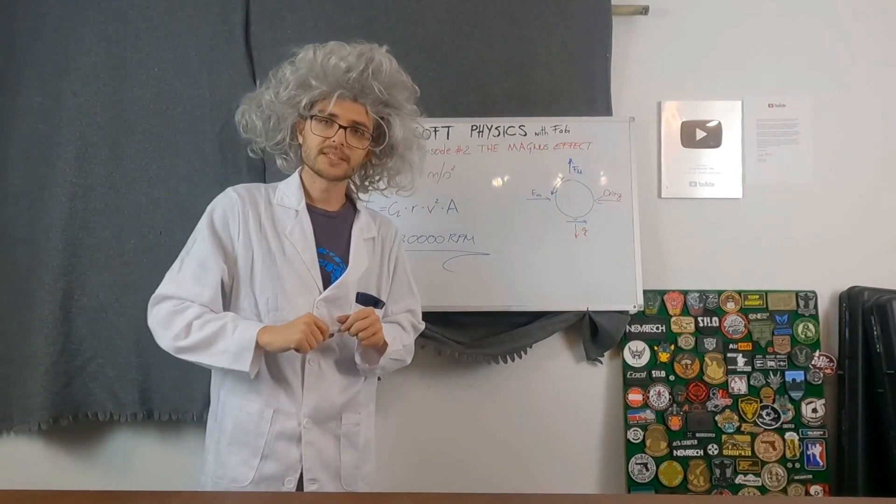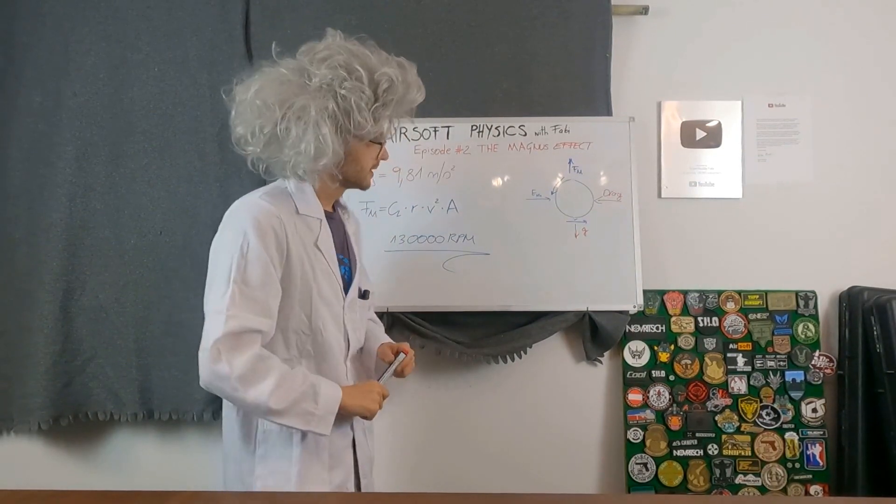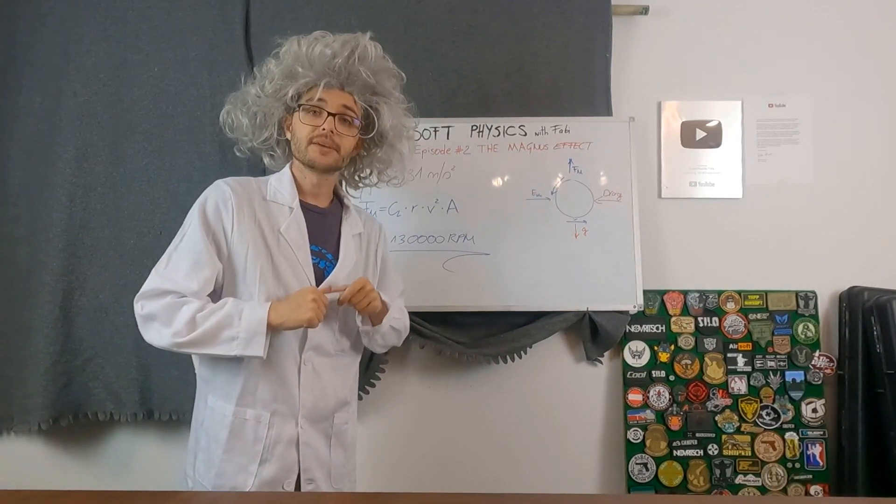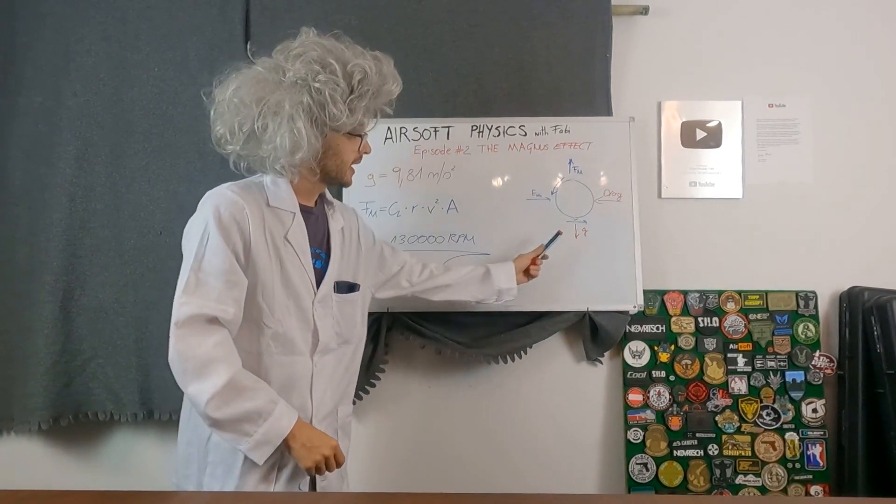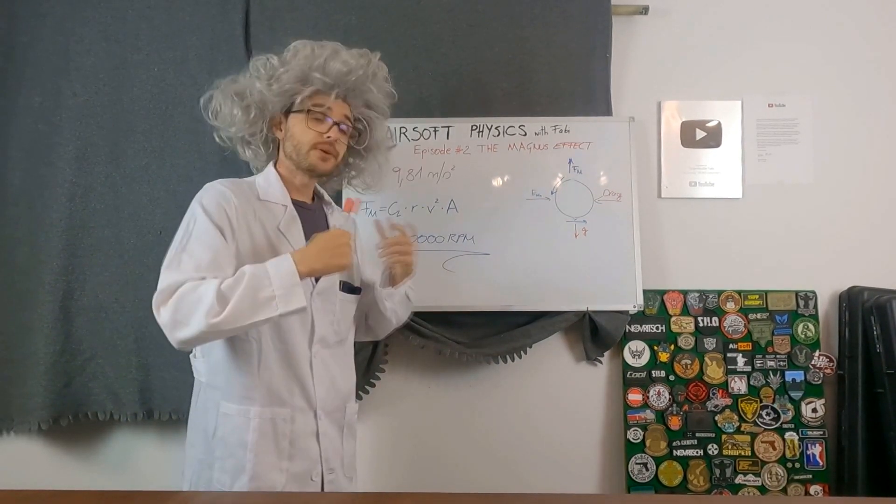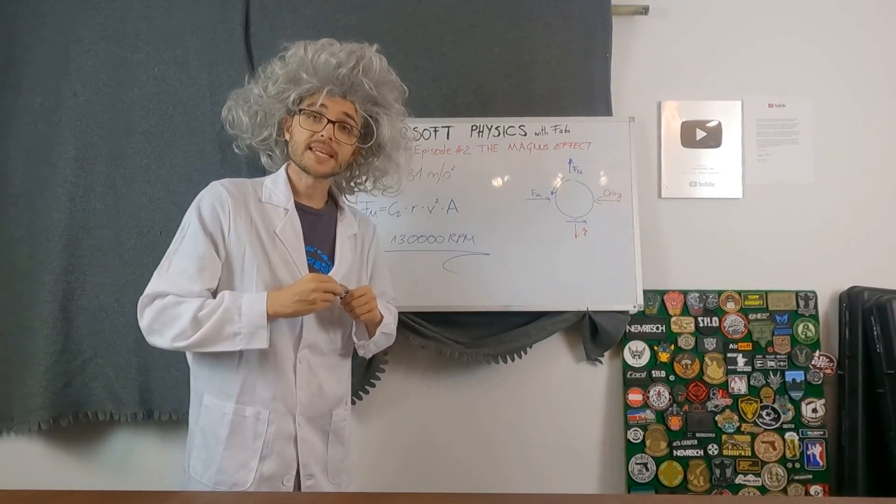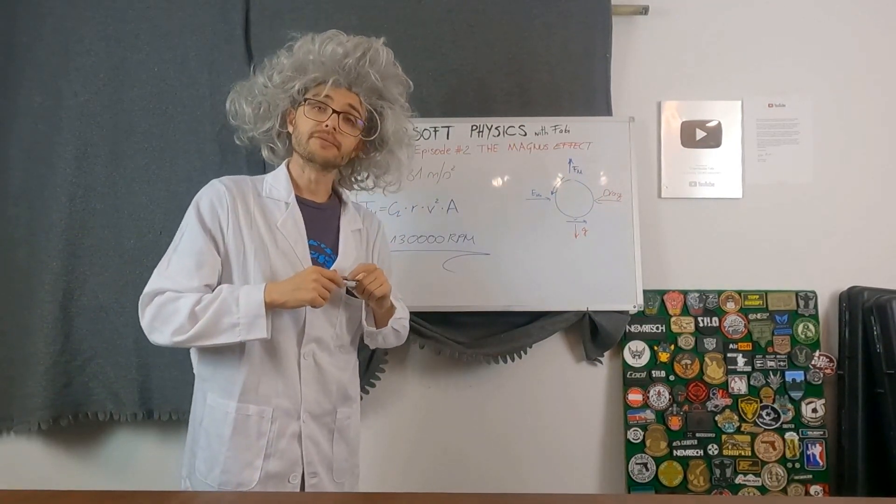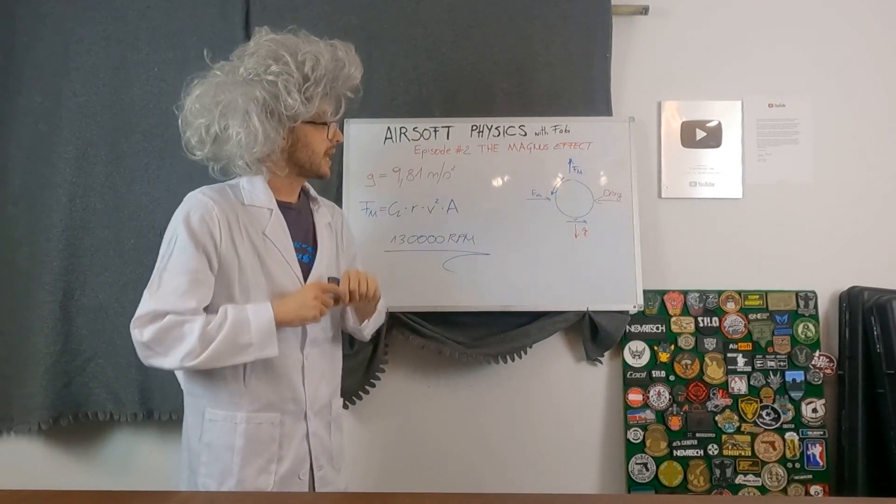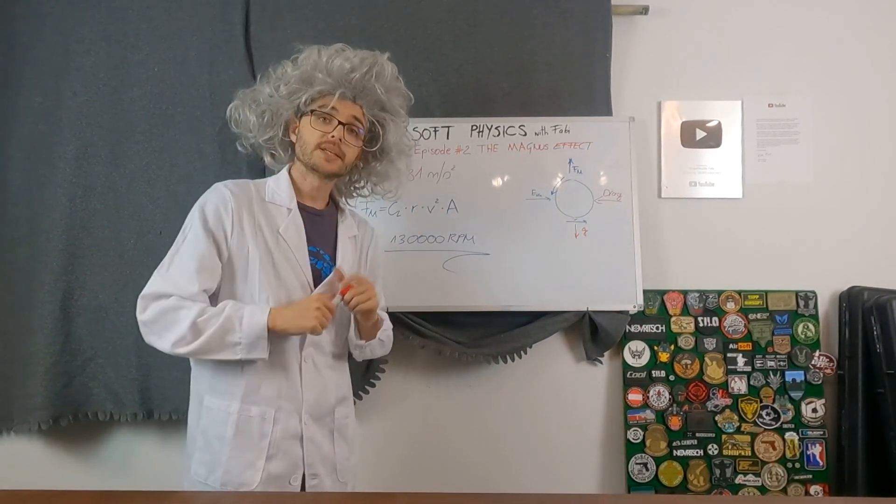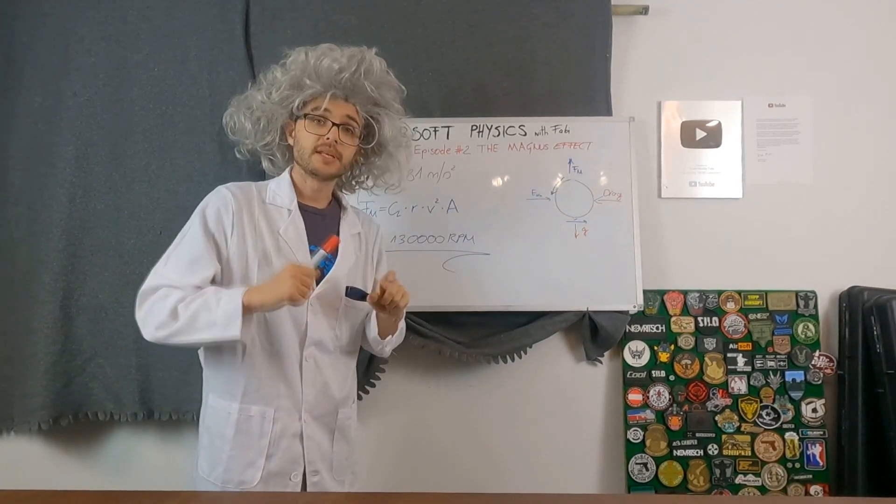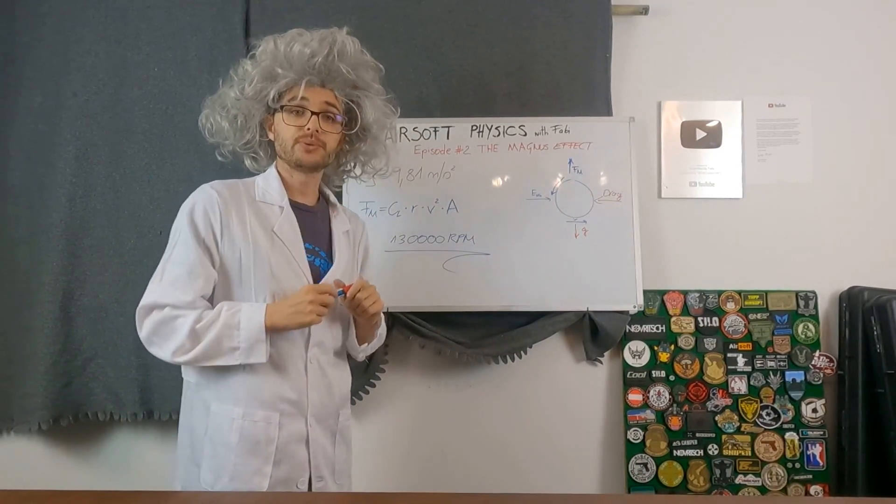So a quick summary of what we have learned today. First of all, we learned every object is affected by gravity and every object is affected by gravity at the same amount. So every object needs the same time to fall down from a given height. And the second thing we learned today is about the actual Magnus effect, which is a force working against gravity created by the backspin that our hop-up puts onto our BB.